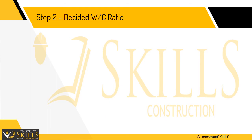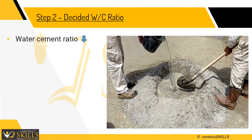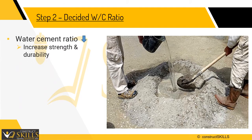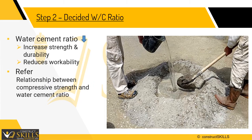Step 2: Decide Water Cement Ratio. Reducing the water cement ratio will increase the strength of the concrete and provide better durability. However, decreasing the water cement ratio can also significantly reduce the workability of the concrete. Obtain the water cement ratio for the desired mean target using the empirical relationship between compressive strength and water cement ratio.